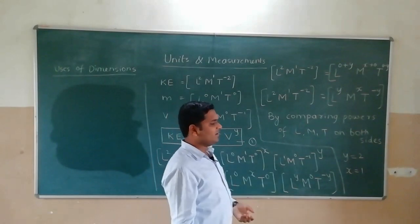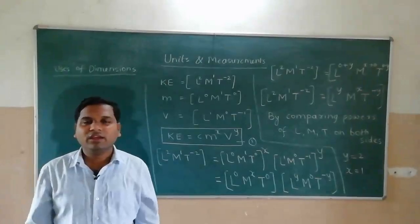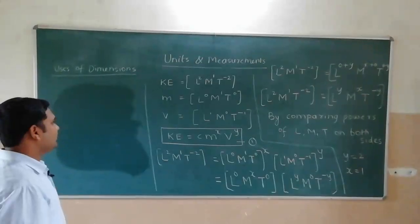I have to compare with mass and time. So, how many unknowns are? Two unknowns. x and y. If you compare two, you will get the answer.